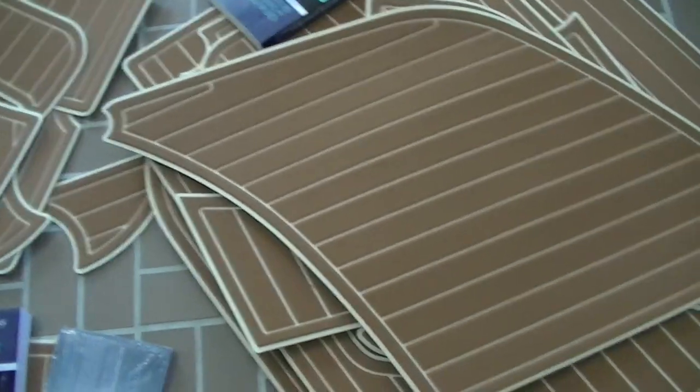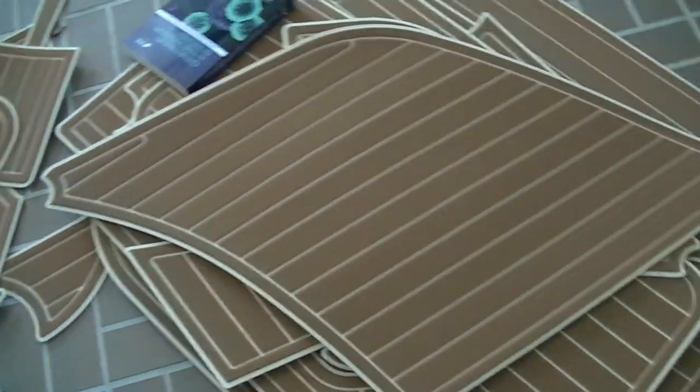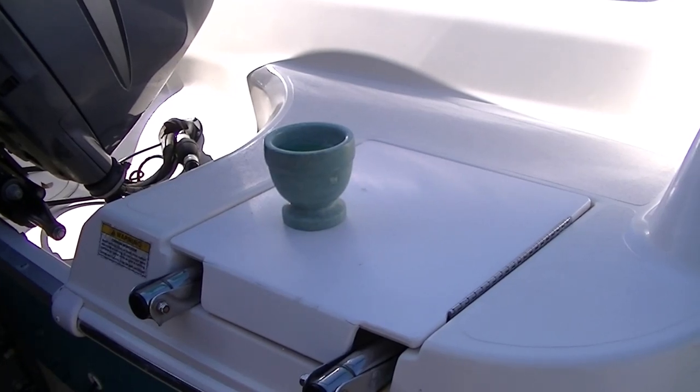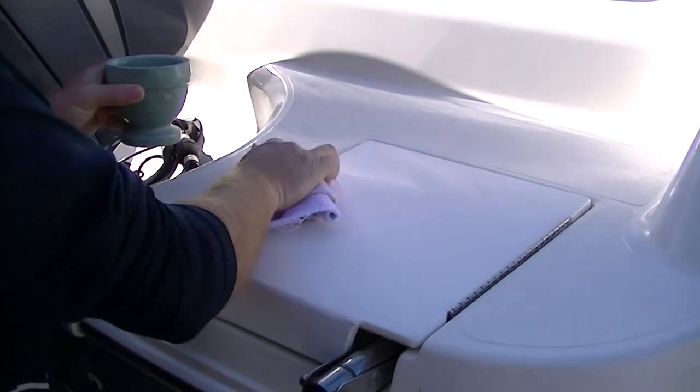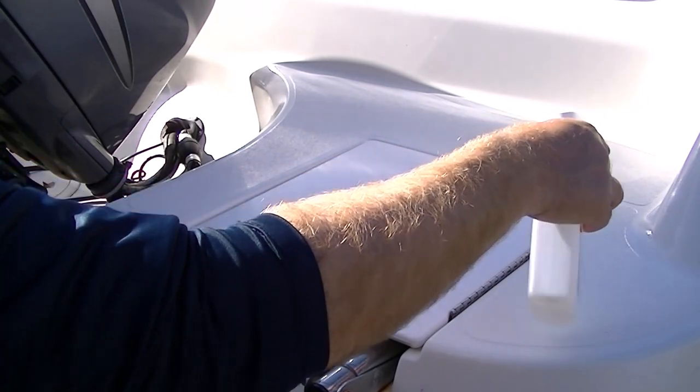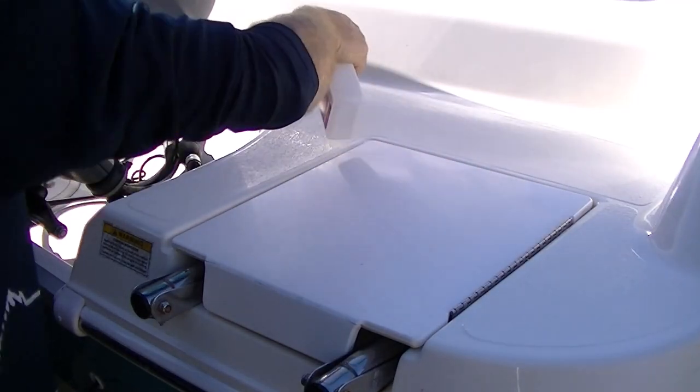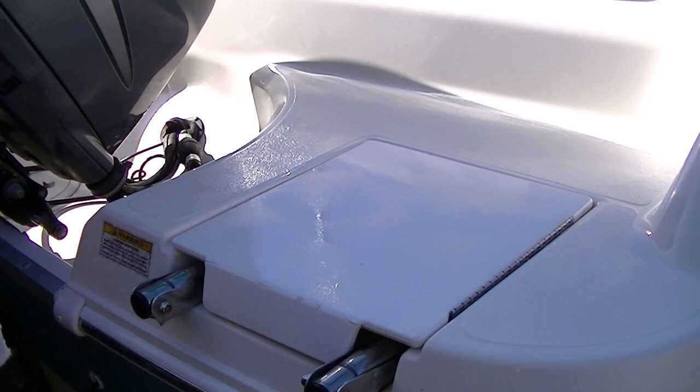When the pieces did finally come in, they were all together and rolled up, so you have to take them out of the box and put them on a flat surface. Before you can start putting down the Seadeck foam pads, you have to use acetone on all the surface you're going to do, and then after you use acetone, you have to use some isopropyl alcohol to take off any residue. Use a different rag for the alcohol.